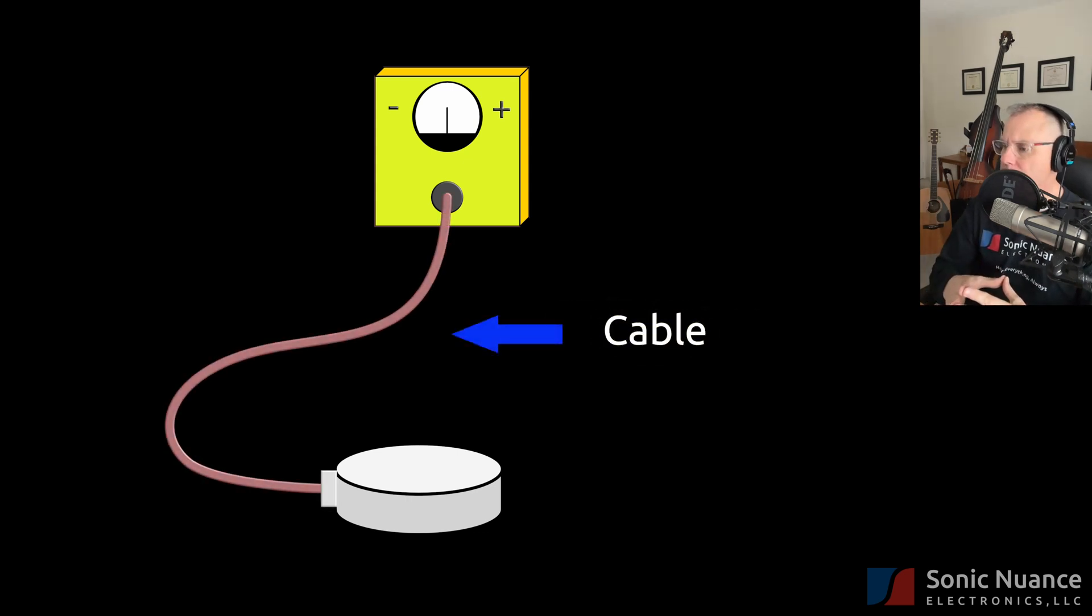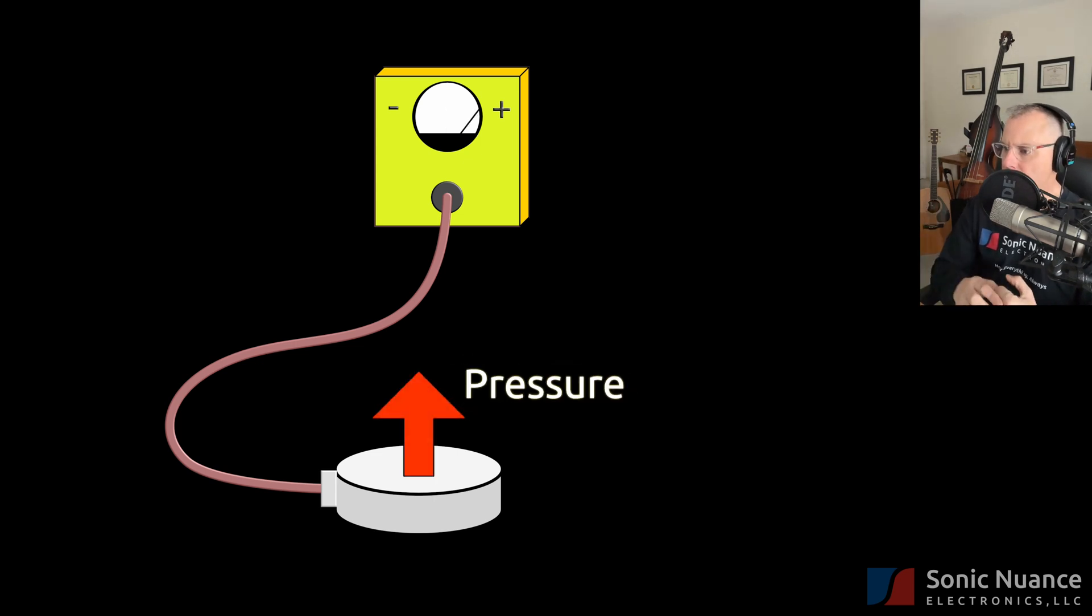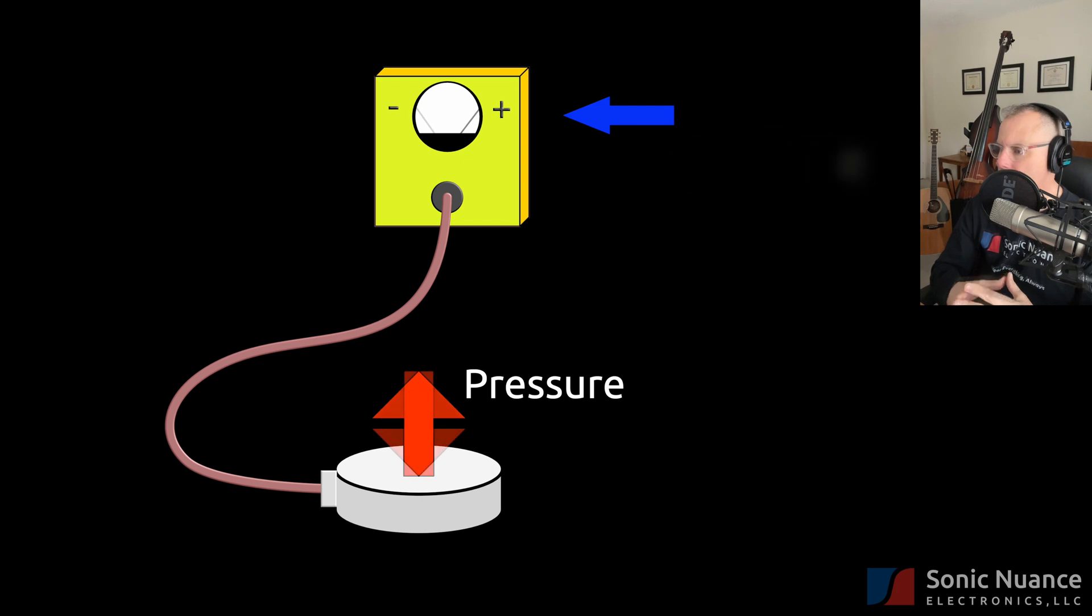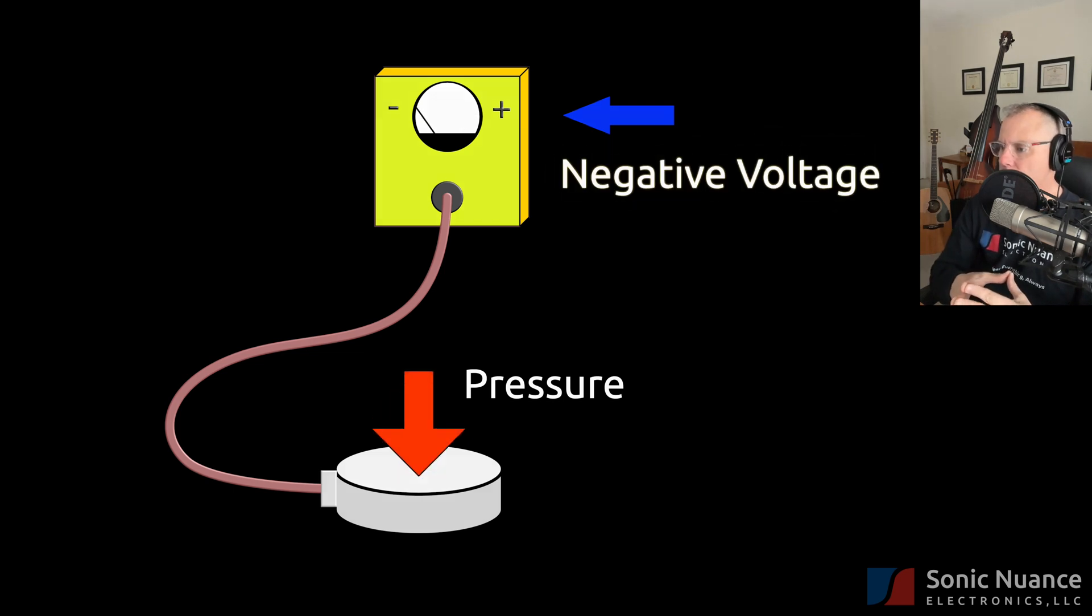Let's add a cable to the piezo crystal to the voltmeter so that we can measure the voltage generated by this crystal. In this case, an up pressure, where the arrow goes up, causes a positive voltage. Notice that the needle on the meter on the voltmeter goes up. Pressing down on the piezo creates a negative voltage.